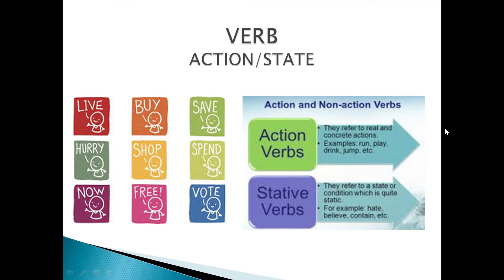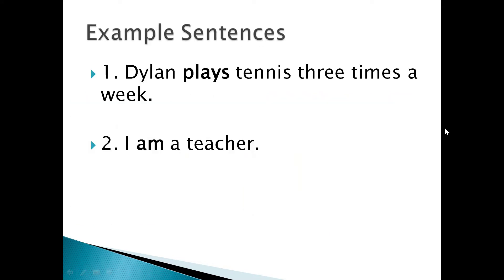Verbs are probably the most important words in the English language. A verb is a word that shows some action or state — state means a situation. For example, in the sentence 'Dylan plays tennis three times a week,' the verb is 'plays' because that's the action. We use 's' or 'es' with the first form of the verb with 'he,' 'she,' or 'it.' So Dylan plays tennis three times a week.